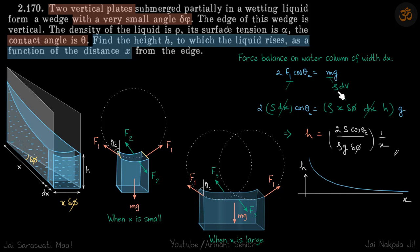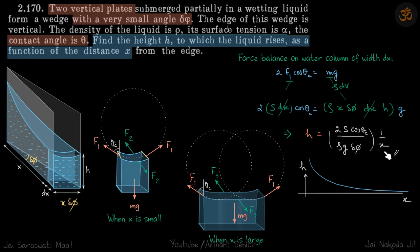This equals mg, where m = ρ·dV. The volume of this element is dx·x·dφ·h. Substituting and solving, we get h = constant × (1/x). So h is inversely proportional to x.